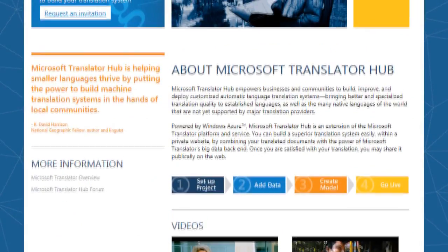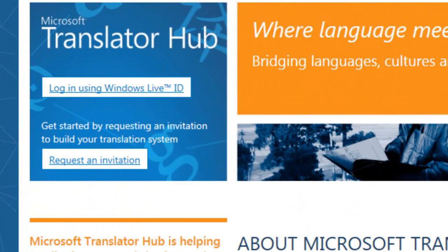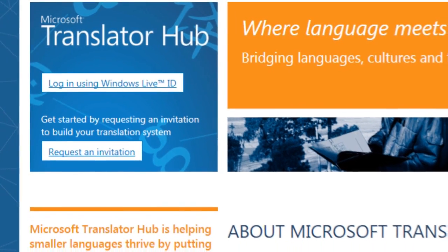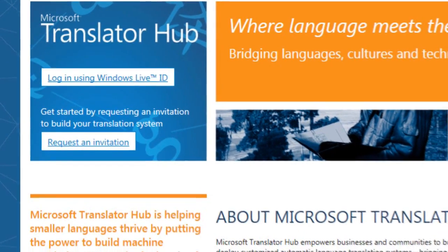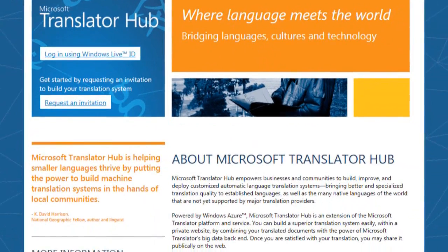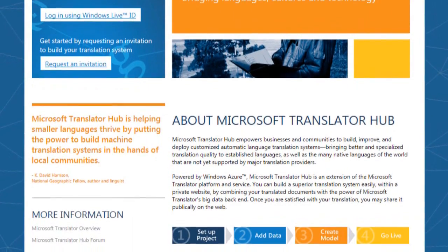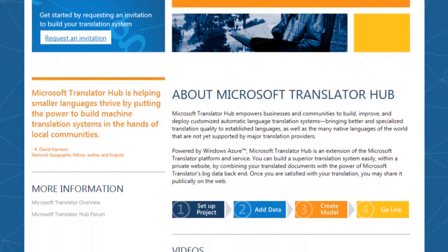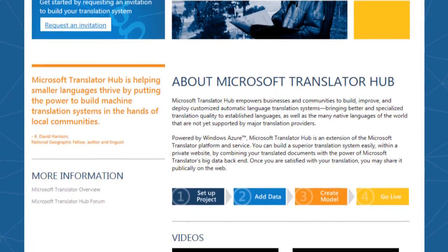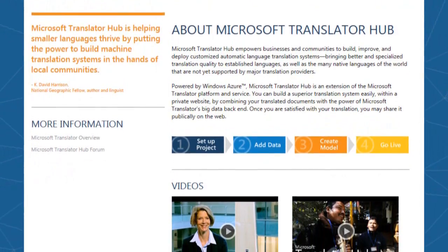The first step in getting started is to request an invitation to join the Microsoft Translator Hub. Simply click on this link on the Translator Hub homepage and request access to the system. Be sure to tell us a little bit about yourself and your project — for instance, whether you're trying to create a translation model for a specific dialect, or whether your interest is more for research, language preservation, or another specific use.